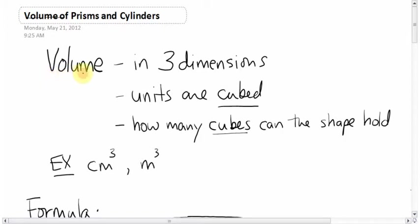Volume is different. It's in three dimensions. So the units instead are cubed. Cubed means little three like that. And so when someone's asking you to find the volume of a certain shape, they're kind of asking you, how many cubes could you fit in that shape?